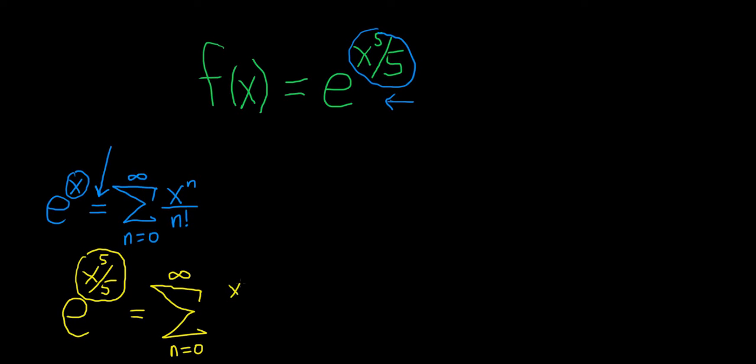So it'll be x to the 5 over 5, and the whole thing here is to the nth power. It's all being divided by n factorial.